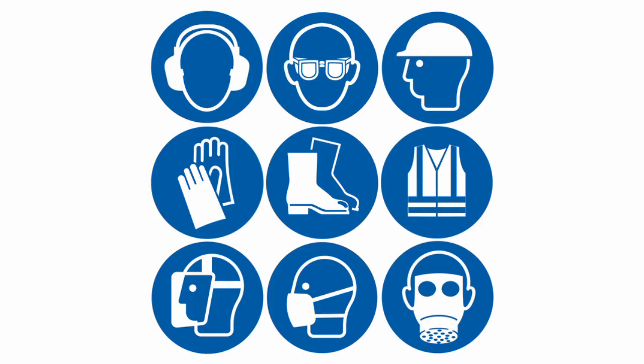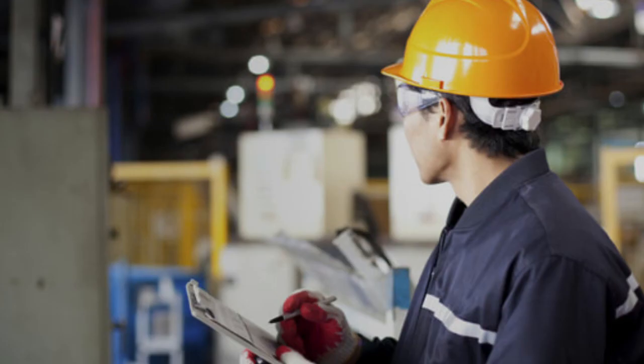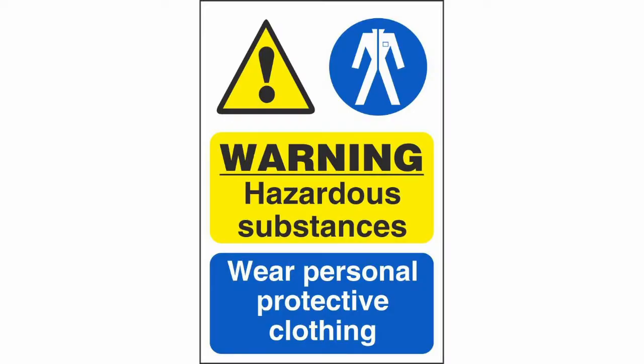Where adequate control cannot be achieved by other means, provide in combination with other control measures suitable personal protective equipment (PPE). Check and regularly review control measures to ensure their continuing effectiveness. Inform and train all employees on the hazards and risks and the control measures developed to minimise the risks. Ensure that the introduction of control measures does not increase the overall risk to health and safety.